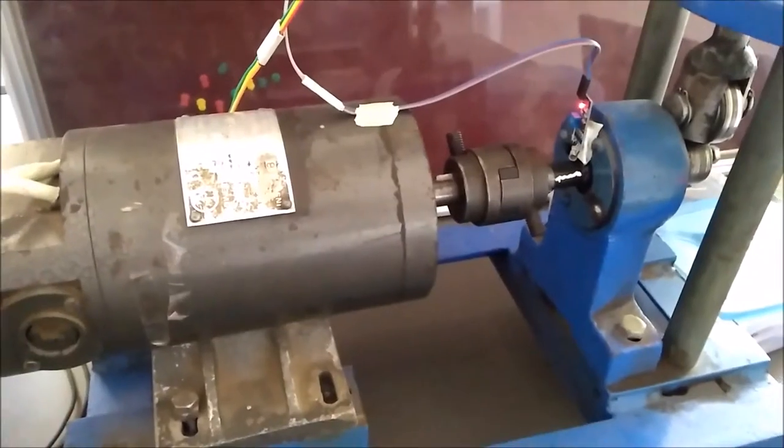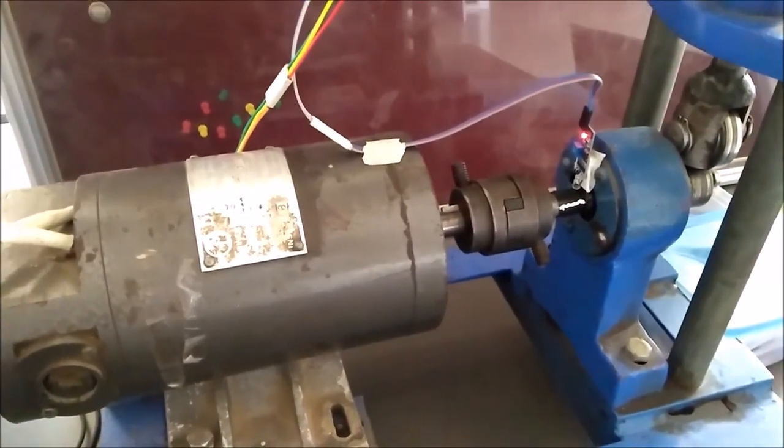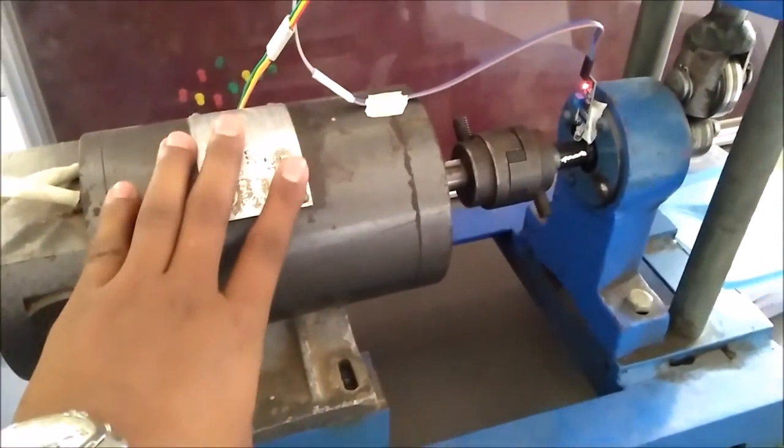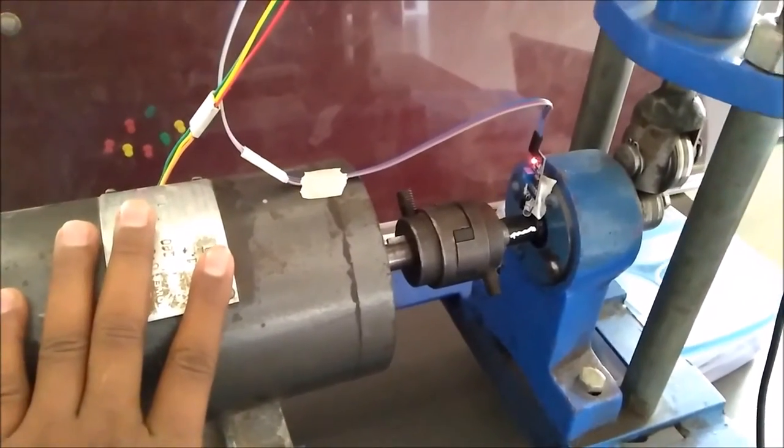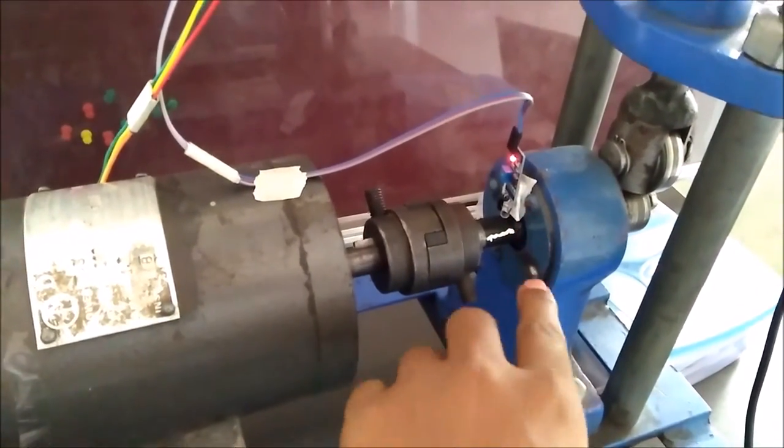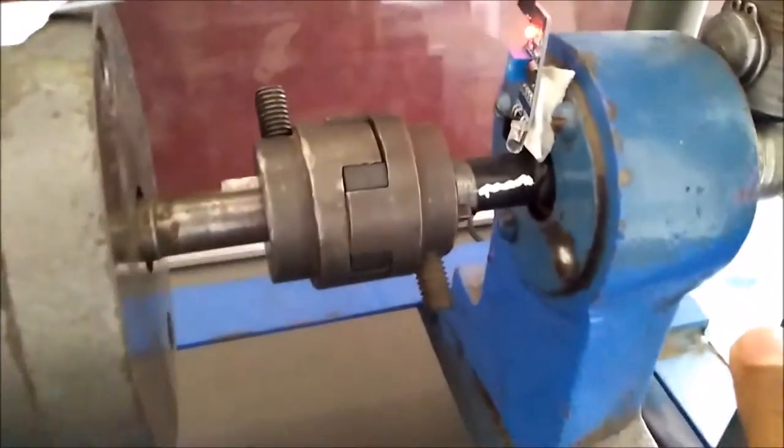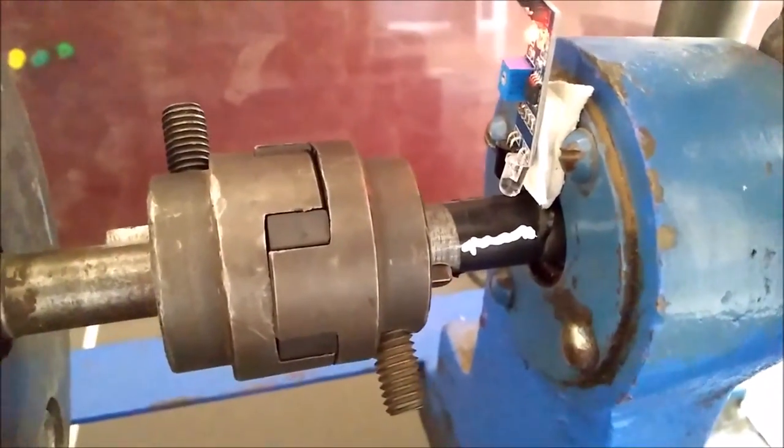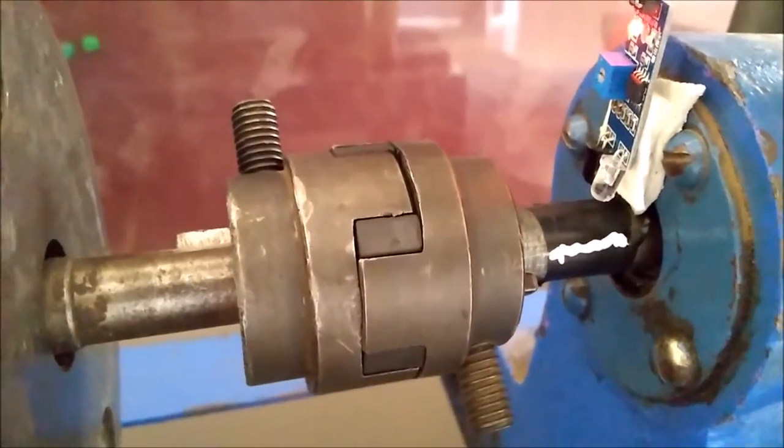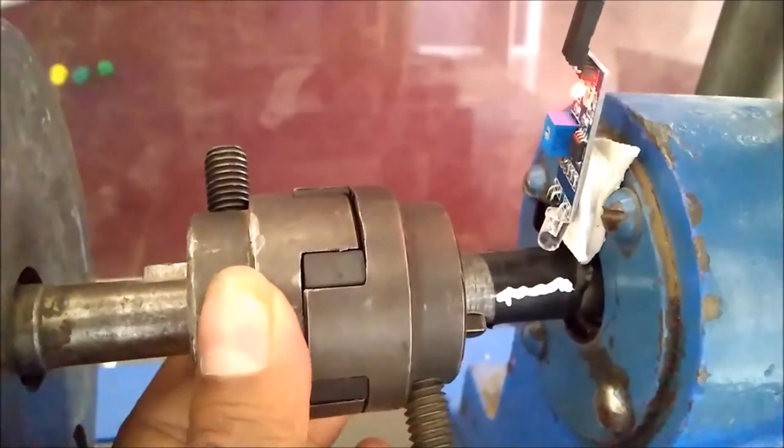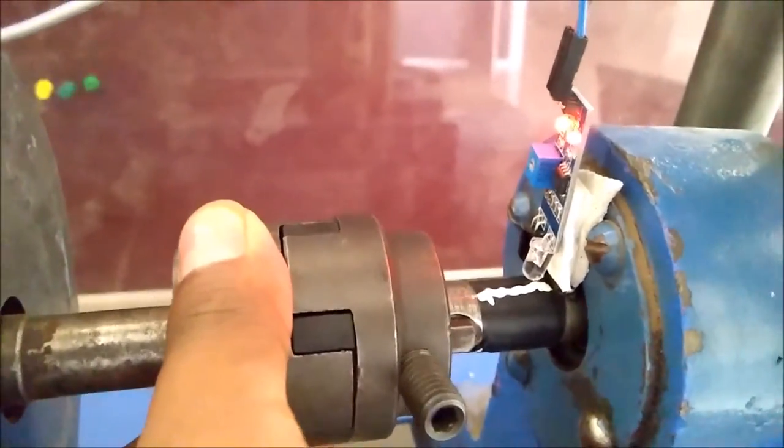Hello friends, the main purpose of this video is to measure the RPM of this motor. We are using this IR sensor to measure the speed of this shaft. For that purpose, we have made one small mark on this shaft so that it can sense when we rotate it.